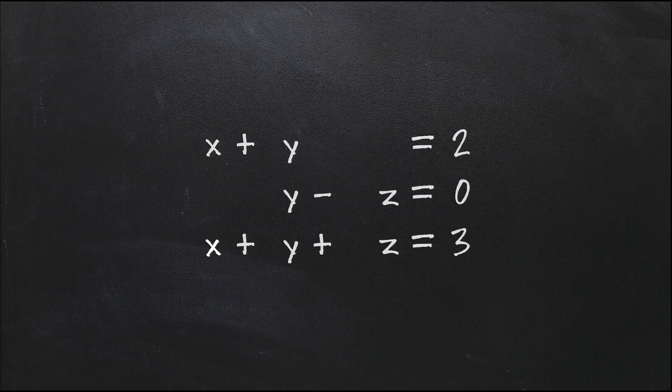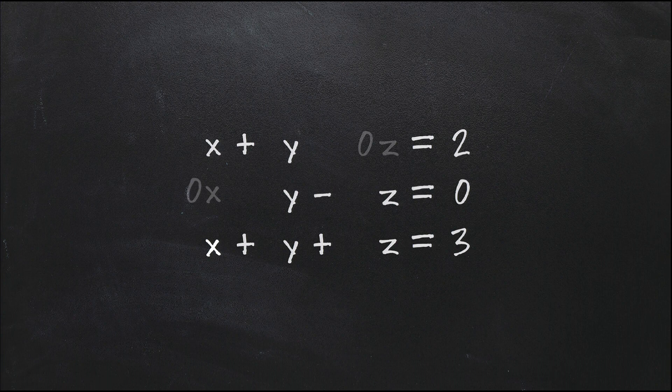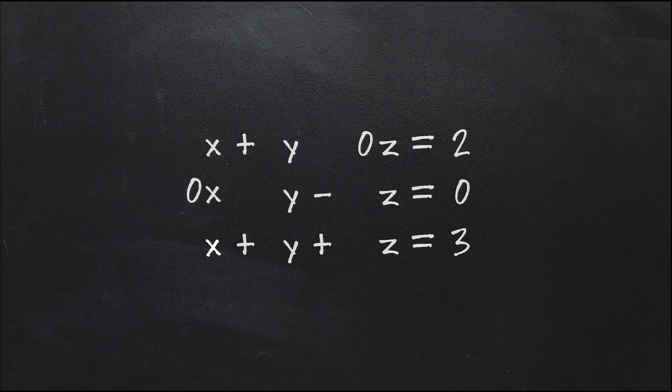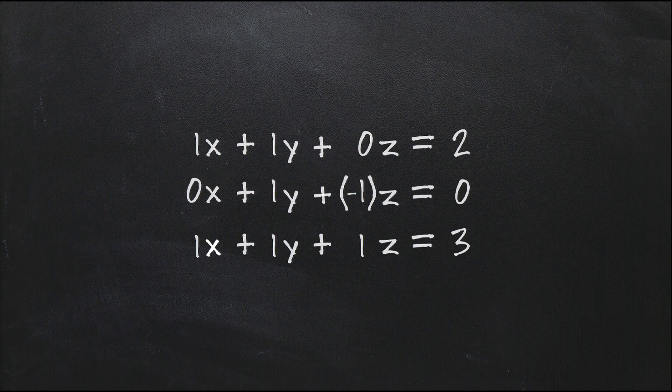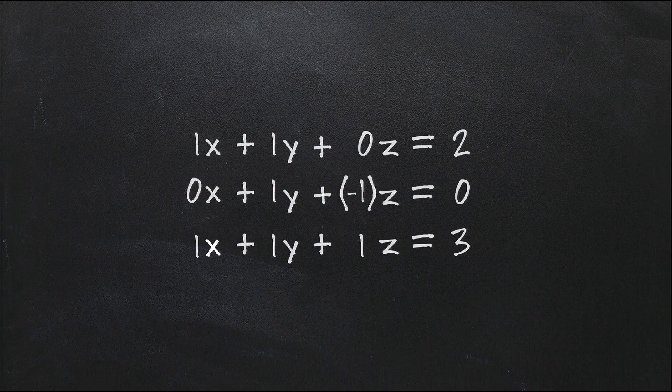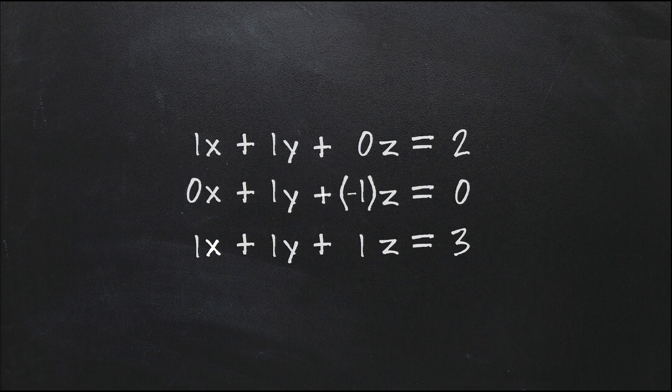Before we can use these computer programs, though, we need to reorder these equations a little bit. We're going to write them really neatly under each other, and where variables are missing, for example, Z in that first equation, we add it, but we multiply it with a zero. And then we explicitly write all the coefficients in front of it and write everything in terms of additions like this.